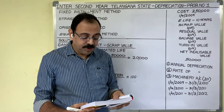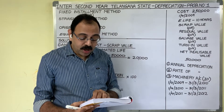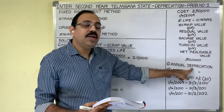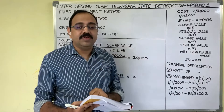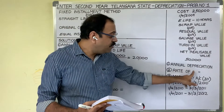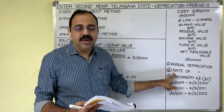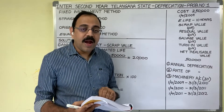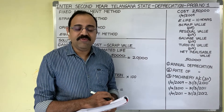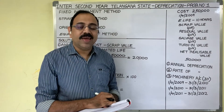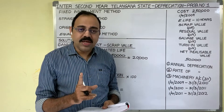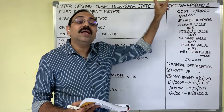Calculate the annual depreciation and the rate of depreciation, assuming that accounts are closed on 31st March every year. He asks two questions: we should calculate the annual depreciation — that is, how much depreciation to provide every year — and the rate of depreciation, meaning the depreciation percentage. While calculating these two, we should assume that the firm is following the financial year. The financial year starts from 1st April and ends with 31st March.